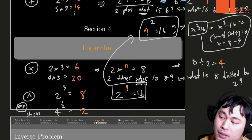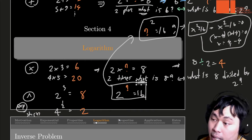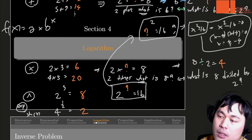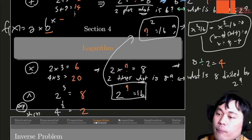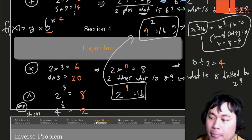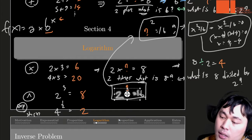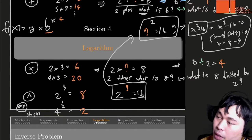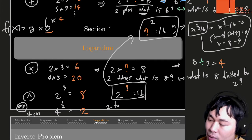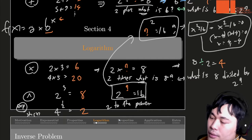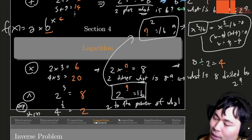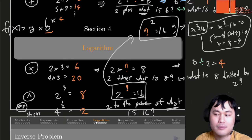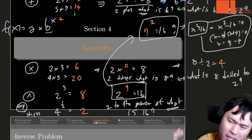Now we ask a different question. What if we fix the base? Because if you go back to the definition, it's a function where the base is already fixed and we change the exponent. So it makes sense that in this kind of question the exponent is unknown. 2 to the power of what is 16?